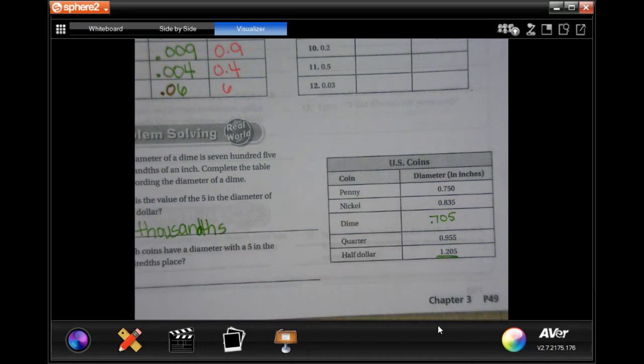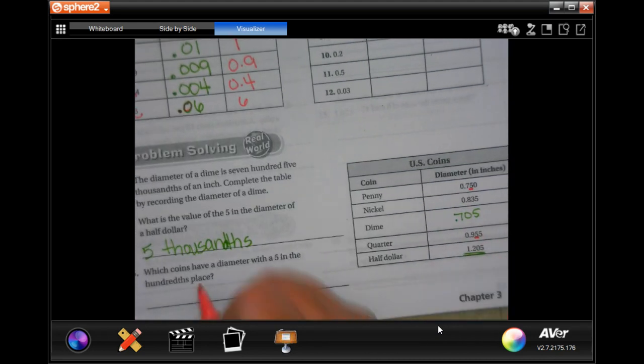Which coins have a diameter with a five in the hundredth place? Right there and right there, and just those two, so you're going to have a penny and a quarter.